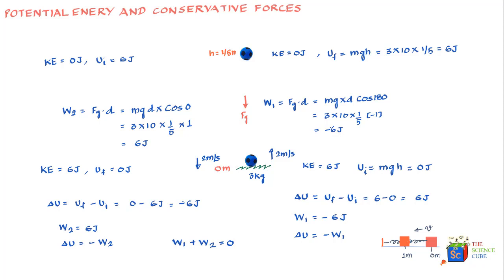Now, what is a non-conservative force? If there is friction between the box and the surface, the force of friction reduces the kinetic energy of the mass as it moves. This friction force results in the generation of thermal energy due to friction between the molecules of the block and the surface. This thermal energy is dissipated and cannot be recovered, unlike kinetic and potential energy in the earth-ball or spring-block systems. Forces that result in energy dissipation where net work done is not zero are called non-conservative forces.